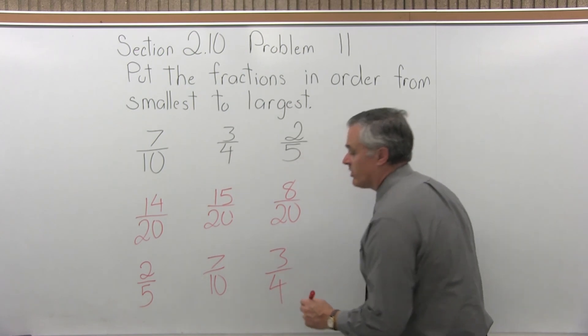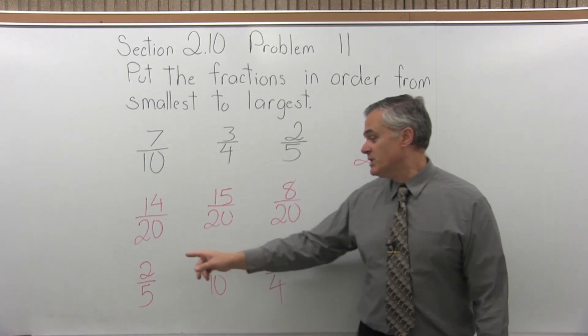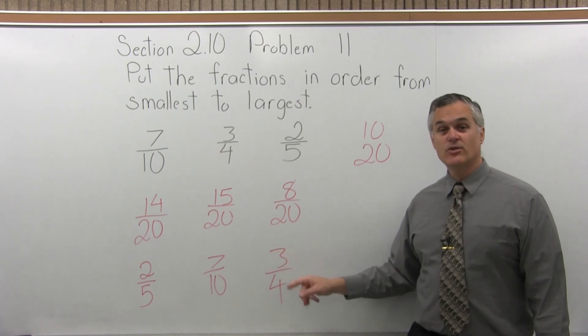So now the fractions in order from smallest to largest would be 2 fifths, then 7 tenths, and then 3 quarters.